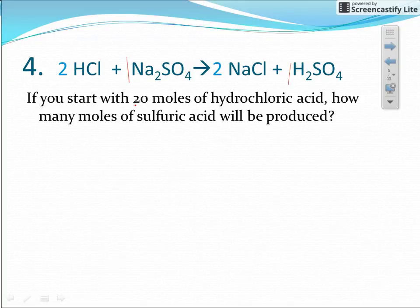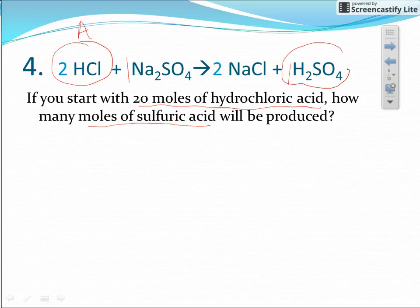All right, number four says if you start with 20 moles of hydrochloric acid, let's try to find hydrochloric acid up in our equation. Okay, hopefully you found it. Here it goes, HCl. Okay, that's substance A. How many moles of sulfuric acid will be produced? So try to find sulfuric acid here. Remember, all acids start with hydrogen, so this is the sulfuric acid.